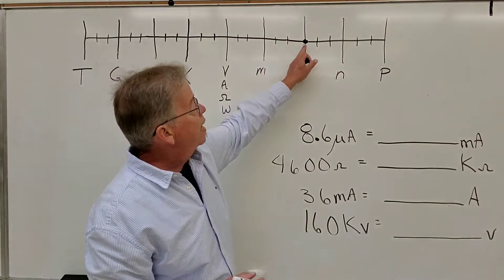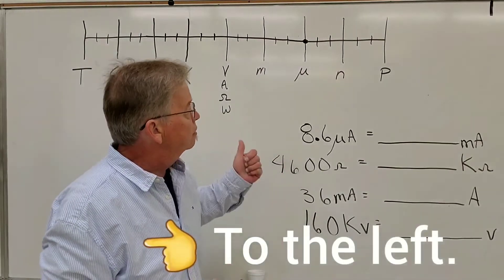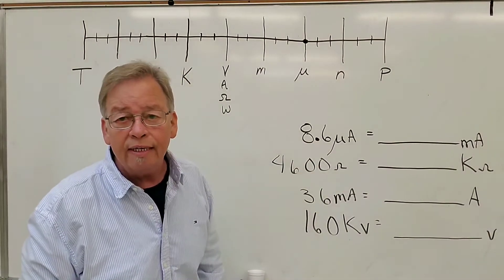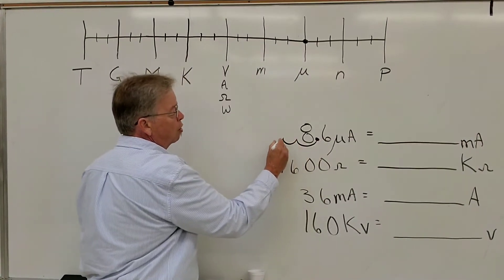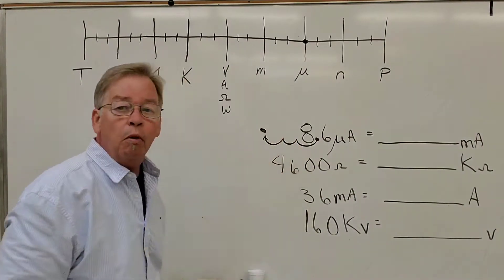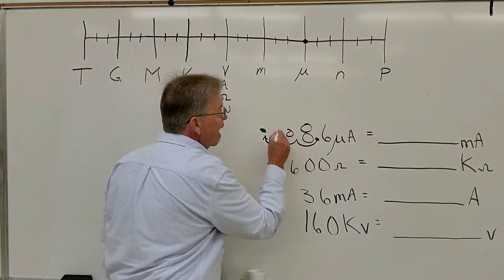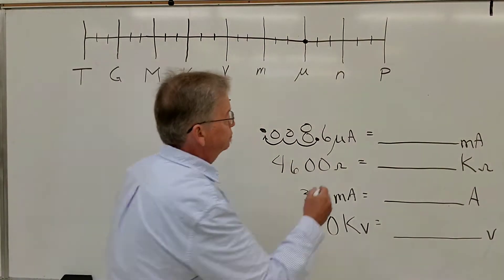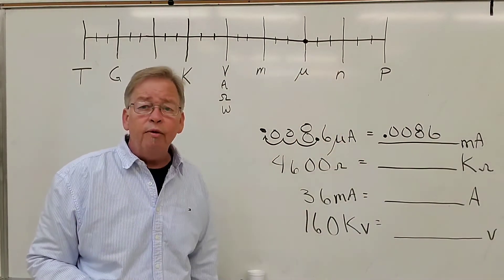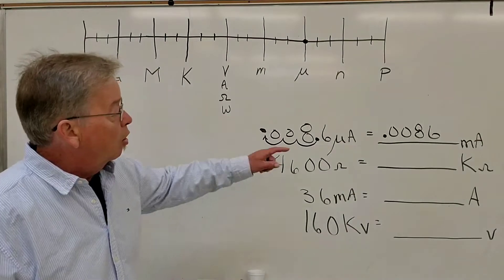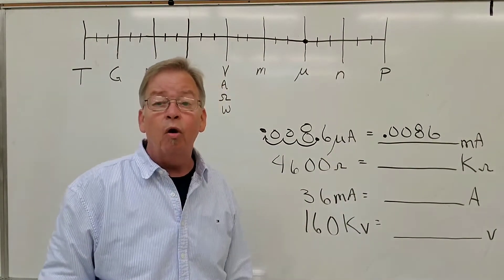To get over to the milli point, I'd have to move that decimal point three places to the left. So if I take this value of 8.6 and I move it three places to the left, I'm going to move that decimal point over there. And what do I do with those blank spots? I add zeros. So my answer would be 0.0086 milliamps. So 8.6 microamps is only 0.0086 milliamps.